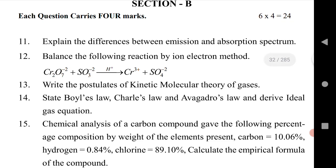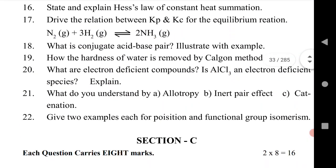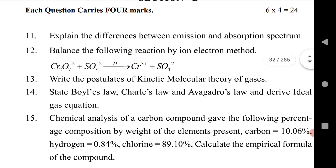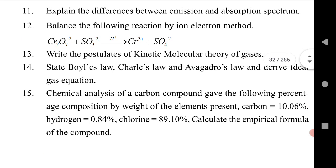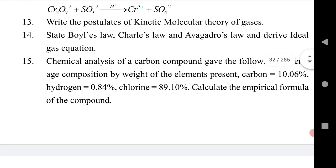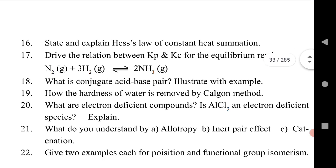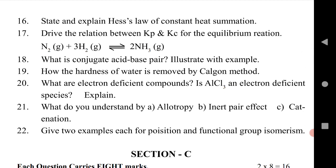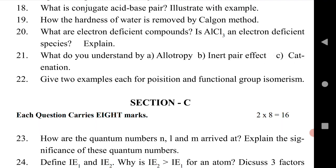Let us see section B. Question 11 is asked from atomic structure. This is the first time a 4 marks question comes from atomic structure. Section B consists of questions 11 to 22. You have 12 questions, out of which you have to answer only 6, and each question carries 4 marks. Question 11 is from atomic structure, 12 is from stoichiometry, 13 and 14 are from states of matter, 15 is from stoichiometry, 16 is from thermodynamics, 17 and 18 are from chemical equilibrium, 19 and 20 are from hydrogen and its compounds, 21 is from group 14 elements of P block, and 22 is from organic chemistry.